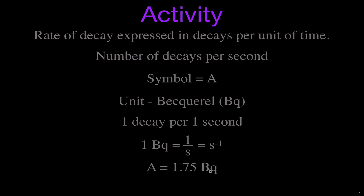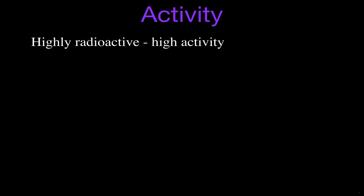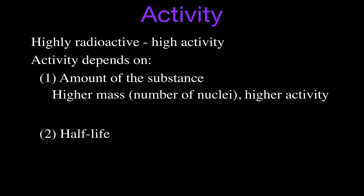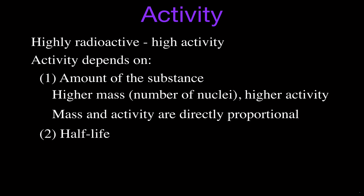Activity depends on both the amount of substance you have and the half-life. If you have a greater mass of the substance — more of the radioactive sample — then you're going to have more nuclei, and if you have more nuclei, you're going to have a higher activity. More mass means more activity; they are directly proportional to each other.